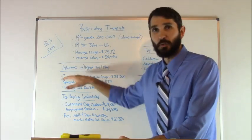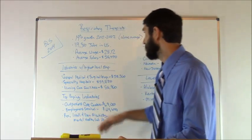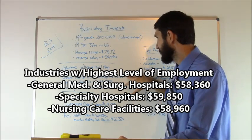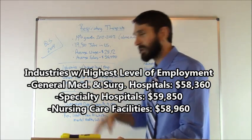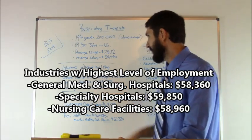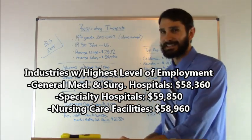First of all, what was the industry with the highest level of employment? General and medical surgical hospitals was number one at $58,360. Specialty hospitals number two at $59,850, and then nursing care facilities was number three at $58,960.